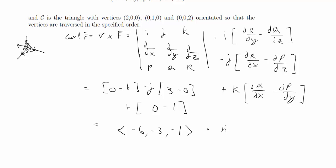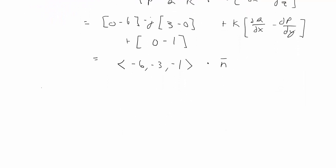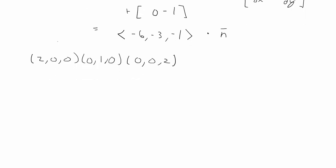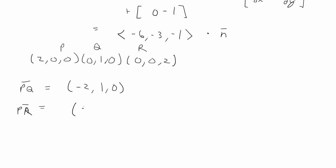Next, we want to find the unit normal vector for the dot product, which requires another cross product. The points given are (2, 0, 0), (0, 1, 0), and (0, 0, 2). From these points we make two edge vectors. Calling them pq and pr: pq is (0−2, 1−0, 0) = (−2, 1, 0), and pr is (0−2, 0, 2) = (−2, 0, 2).